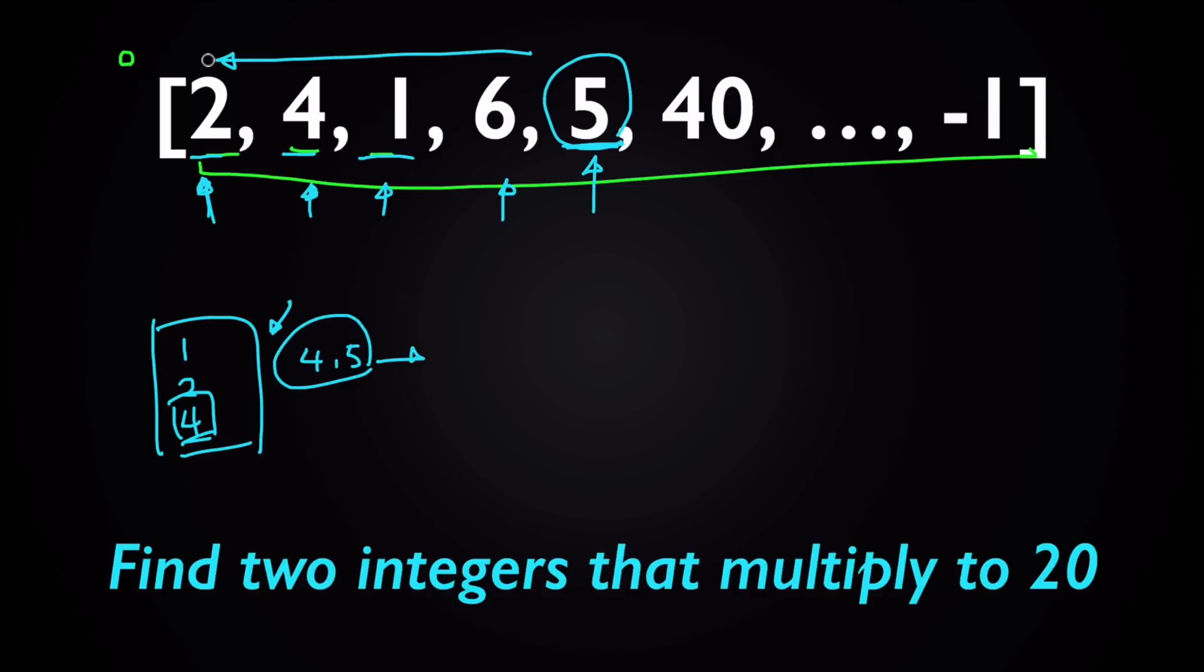Once you have this basic strategy down which you can use on paper, you can then translate this into data structures and algorithms using your computer science knowledge. With this solution, a good data structure to use to keep track of each number we've seen might be a hash table or dictionary, for example.